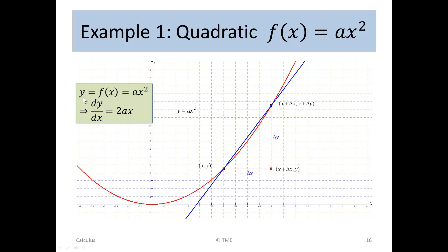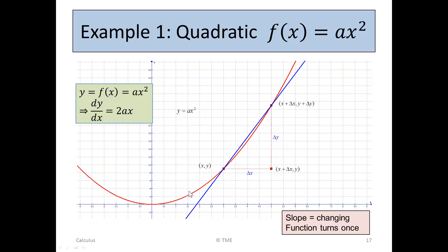Using this without going from first principles, we would say y equals f(x) equals ax squared. The dy/dx of this: we keep the a, take down the 2 to get 2a, giving us 2ax. So 2ax is the slope of this function. The slope depends on x, so the blue line depends on where you are on the curve. The slope is changing — here it's negative and here it's positive.